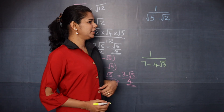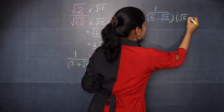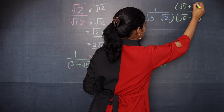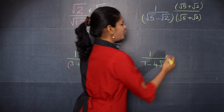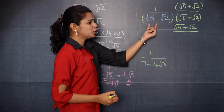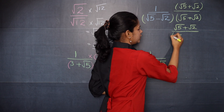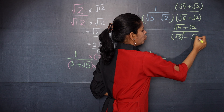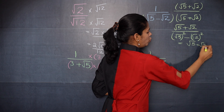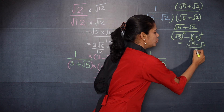Moving on to the next question. You can apply a conjugate here. The denominator is root 5 minus root 2, so you will multiply it with root 5 plus root 2 in both numerator and denominator. Now 1 into root 5 plus root 2 is root 5 plus root 2 divided by — applying the identity A minus B into A plus B equals A square minus B square, that is root 5 squared minus root 2 squared, which is 5 minus 2 equals 3. So the answer is root 5 plus root 2 over 3.